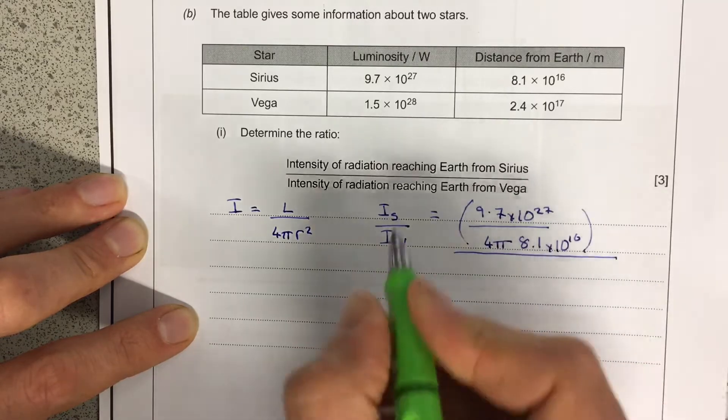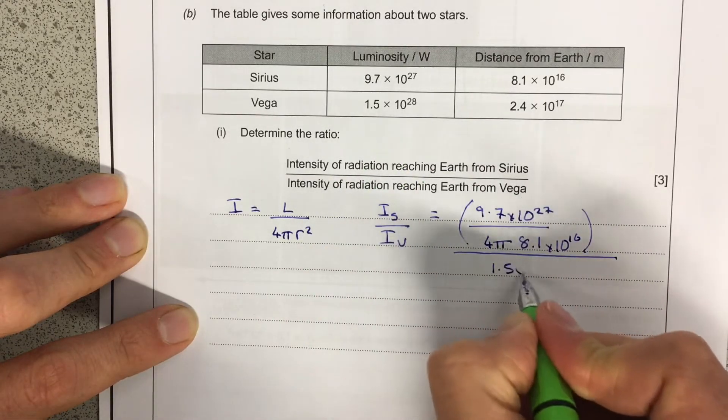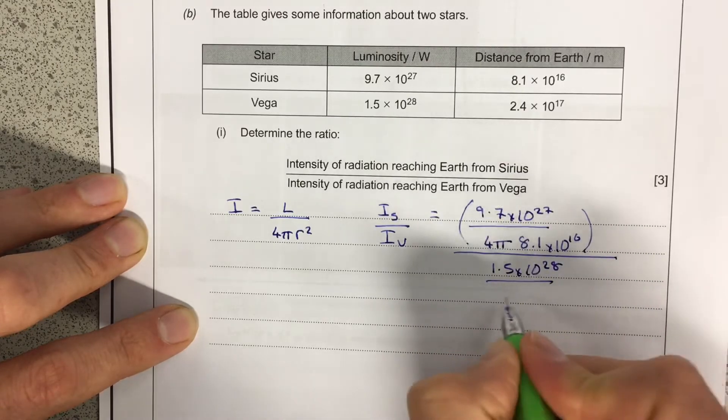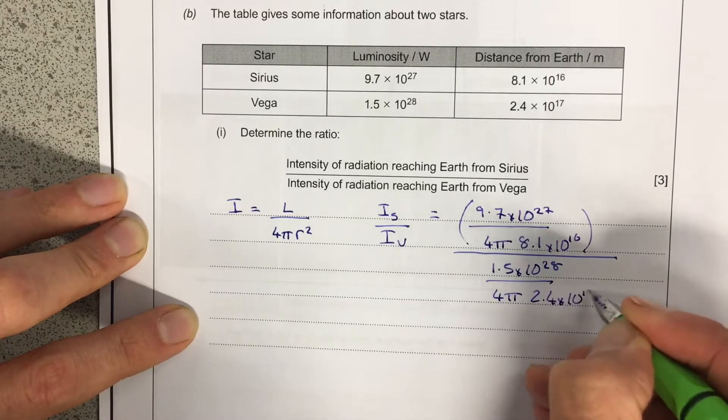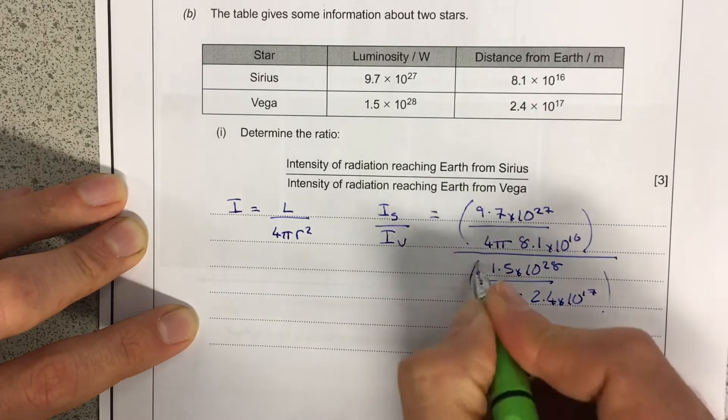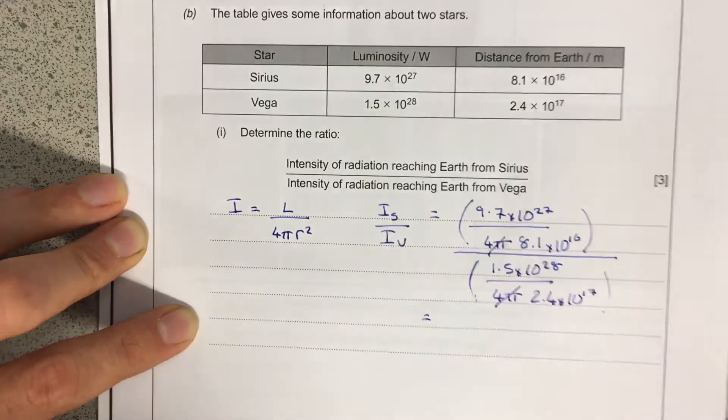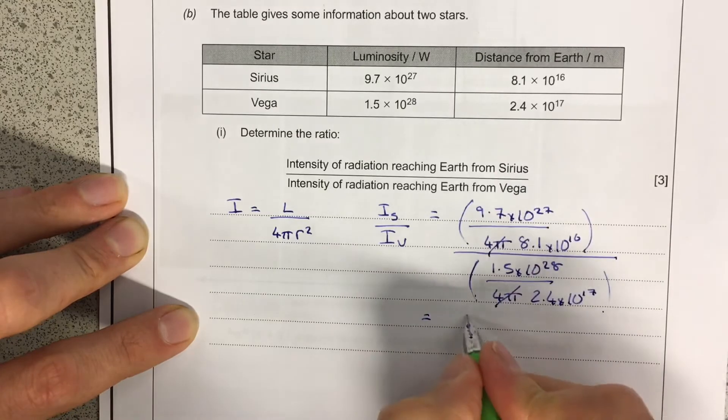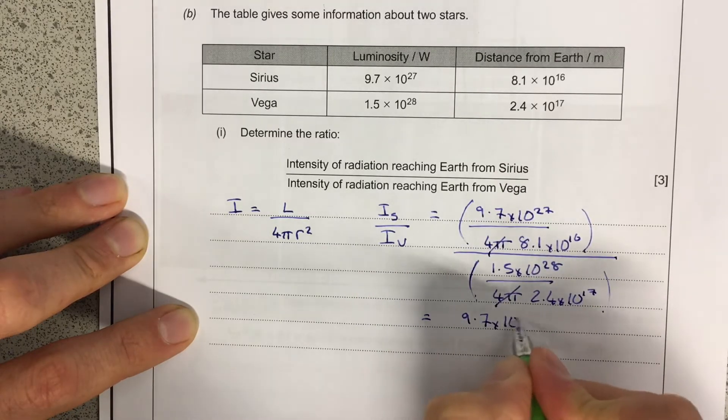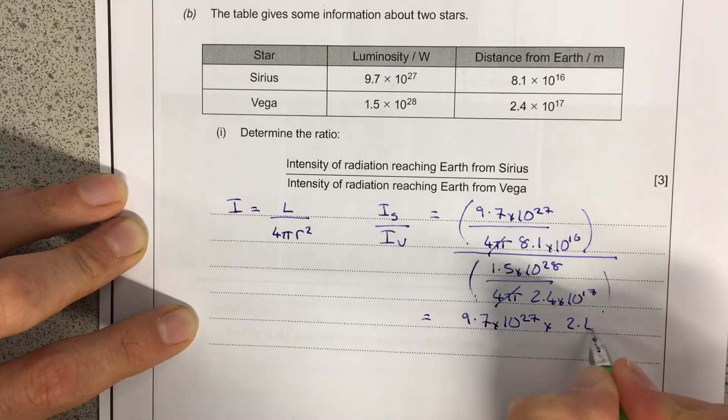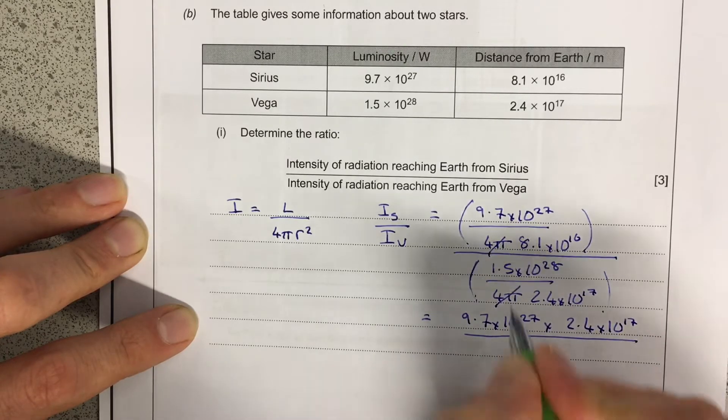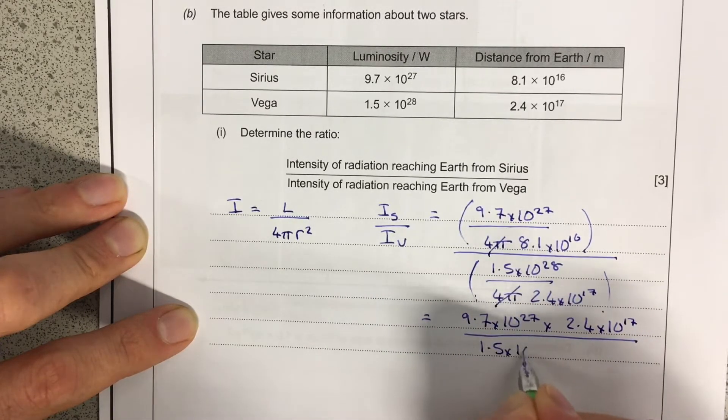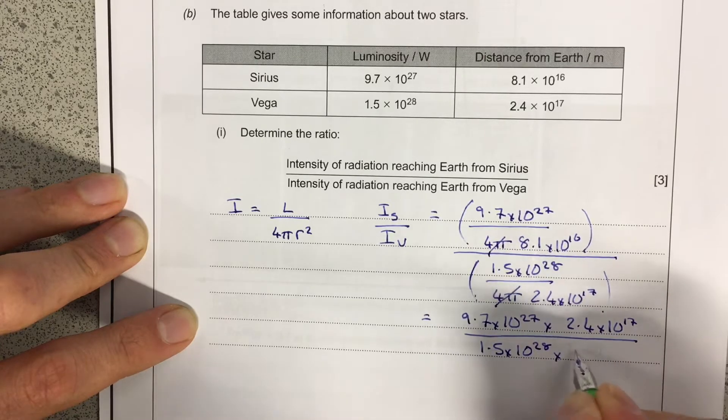And that's all going to be over 1.5 times 10 to the 28 over 4 pi. From there, 2.4 times 10 to the 17. OK, so again I'm going to chuck those into brackets. Now a little bit of mathematical trickery means I can cancel those things out. But this will come up to here, so it's going to become 9.7 times 10 to the 27 times 2.4 times 10 to the 17 all over my next one is 1.5 times 10 to the 28 times 8.1 times 10 to the 16.